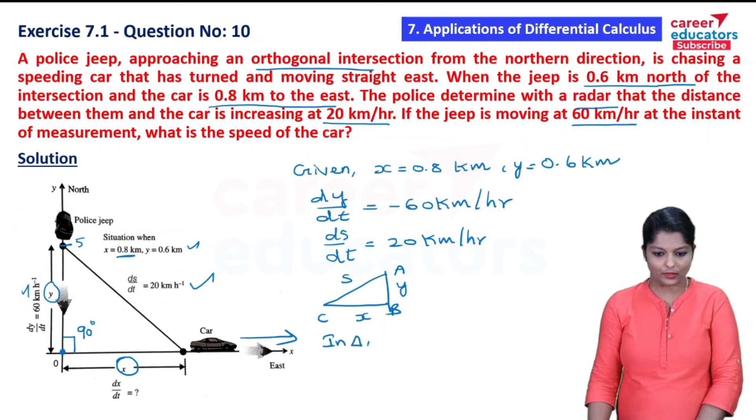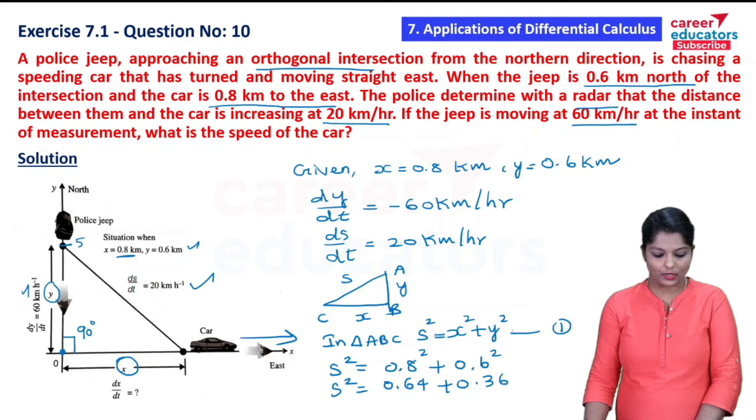In triangle ABC, S squared equal to x squared plus y squared. This is equation number 1. Substituting the values: S squared equal to 0.8 squared plus 0.6 squared, which equals 0.64 plus 0.36 equals 1. So S squared equal to 1.